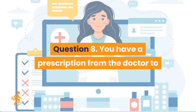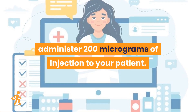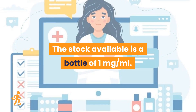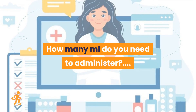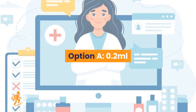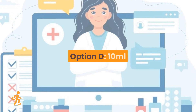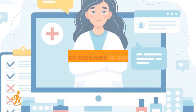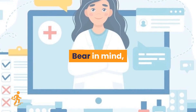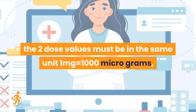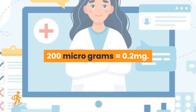Question 8. You have a prescription from the doctor to administer 200 micrograms of injection to your patient. The stock available is a bottle of 1 milligram per milliliter. How many ml do you need to administer? Option A: 0.2 ml. Option B: 20 ml. Option C: 2 ml. Option D: 10 ml. Correct answer is Option A, 0.2 ml. Bear in mind, the two dose values must be in the same unit: 1 mg equals 1000 micrograms, so 200 micrograms equals 0.2 mg.